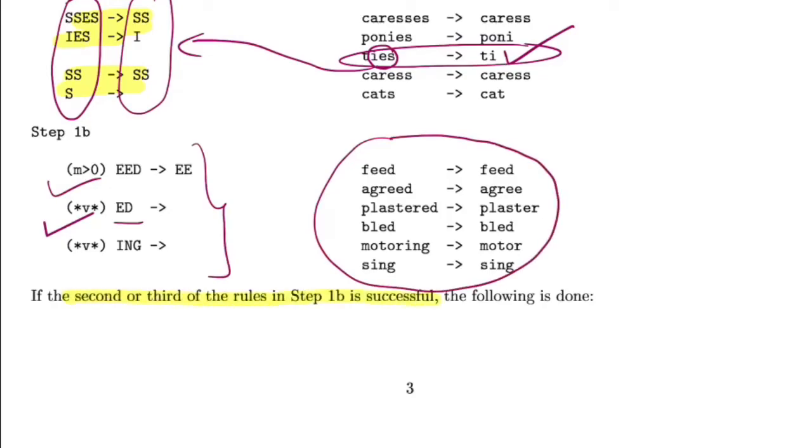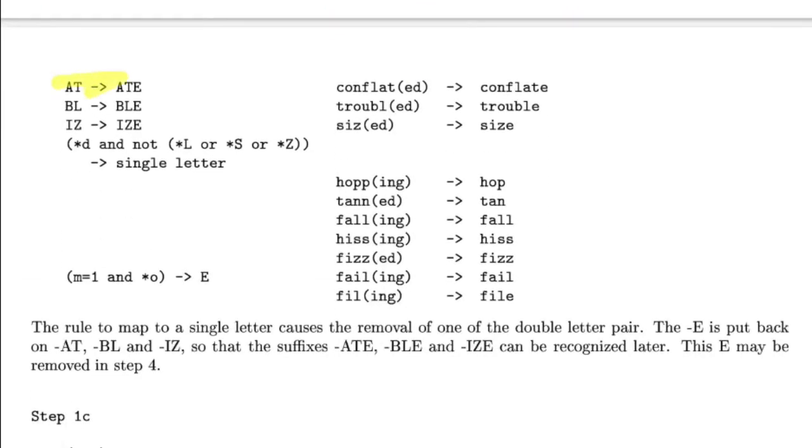All of these rules are part of 1b. These are some of the examples. If the second and third rule of 1b is successful, meaning any of these hold true, then the following is done.